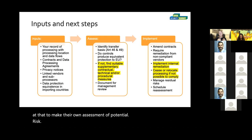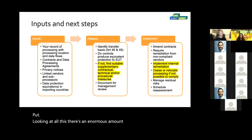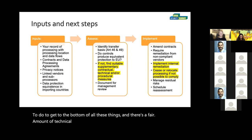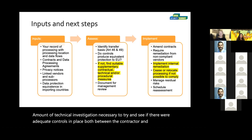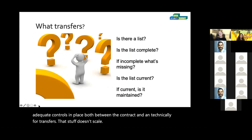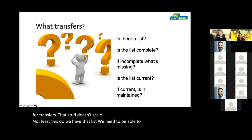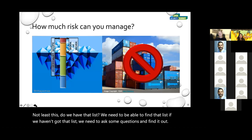Looking at all this, there is an enormous amount of specialist digging necessary to get to the bottom of these things, and a fair amount of technical investigation to see if there are adequate controls in place — both contractually and technically for transfers. That stuff doesn't scale. We need to be able to find the list of transfers first. If we haven't got that list, we need to ask some questions and find it. And if we have got that list, we still don't have the context of the personal data in those systems or the context of the vendors.